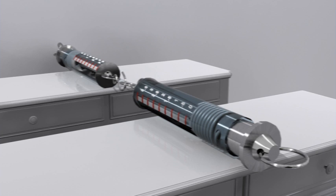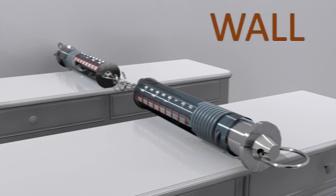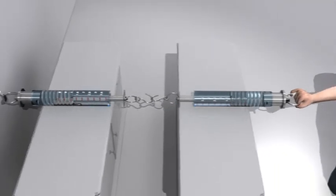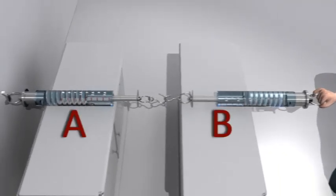Take two similar spring balances A and B. The free end of spring balance A is attached to the hook which is fixed in a wall. Now pull the free end of spring balance B towards right side by hand. We see that both spring balances show the same reading which is 2 Newton.